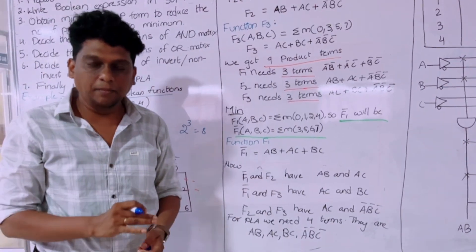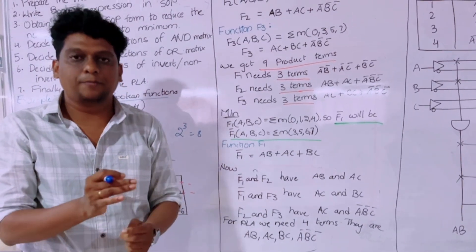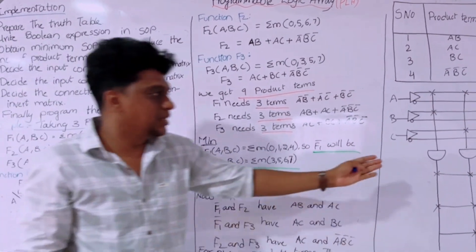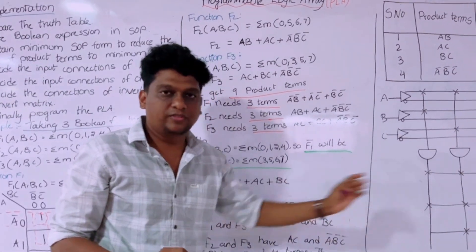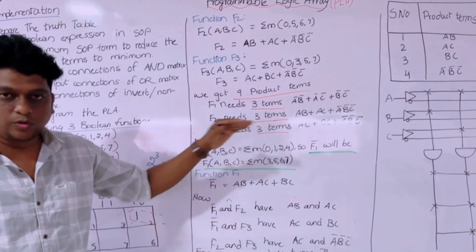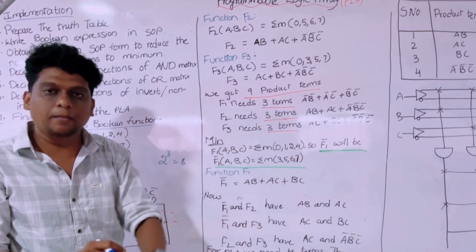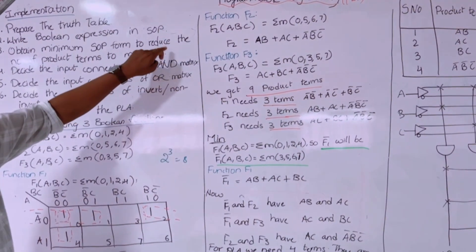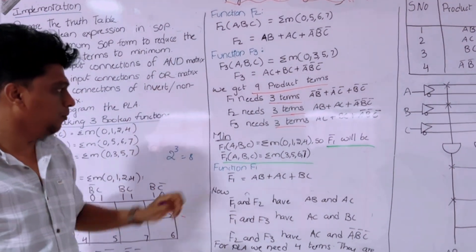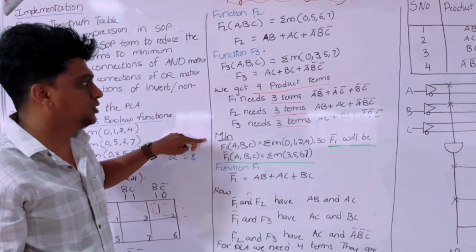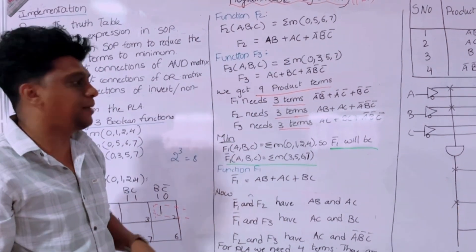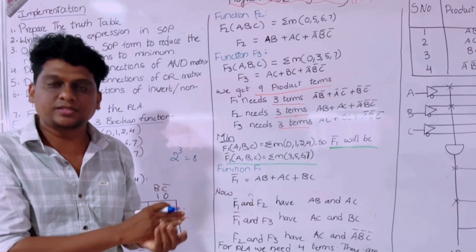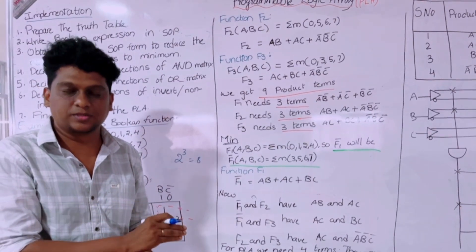Our aim is to reduce the product terms and the sum terms — only then can we get a simplified version of the design. We have to reduce this nine to a minimal number. That is the main aim of this PLA. So now what we have to do is compare the terms: F1 with the other two, F2 with the other two, and F3 with the other two.